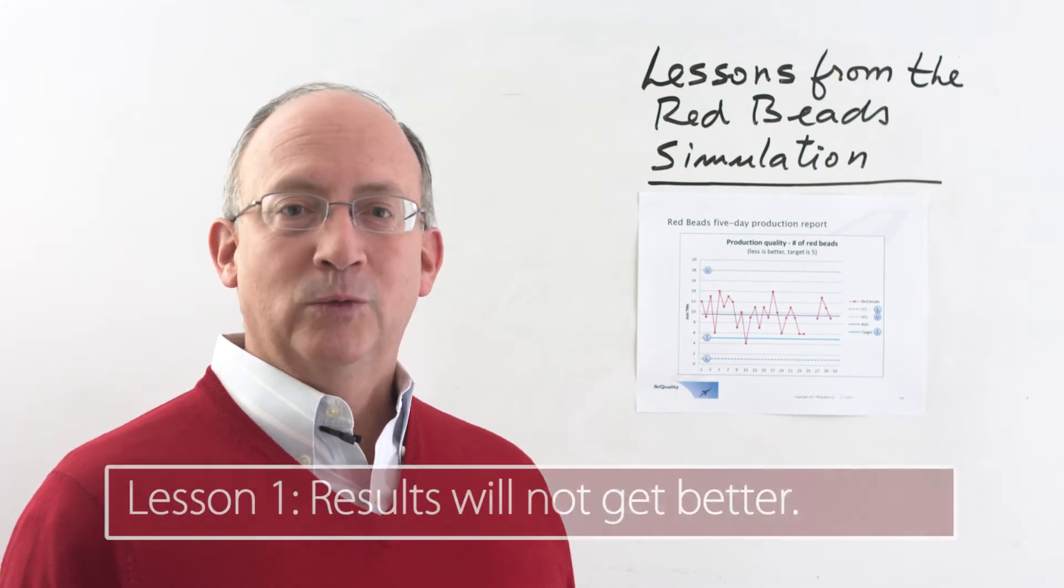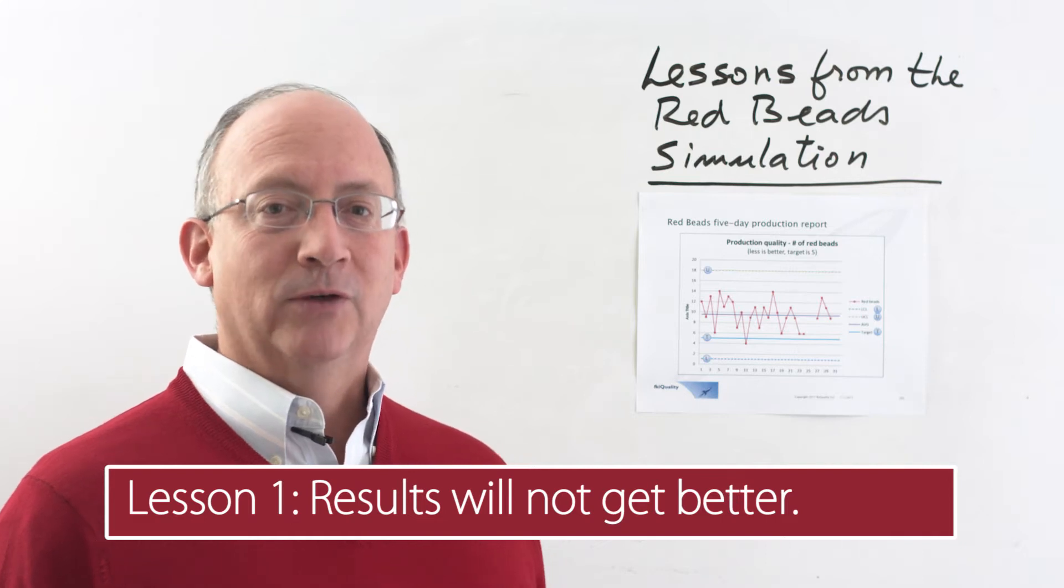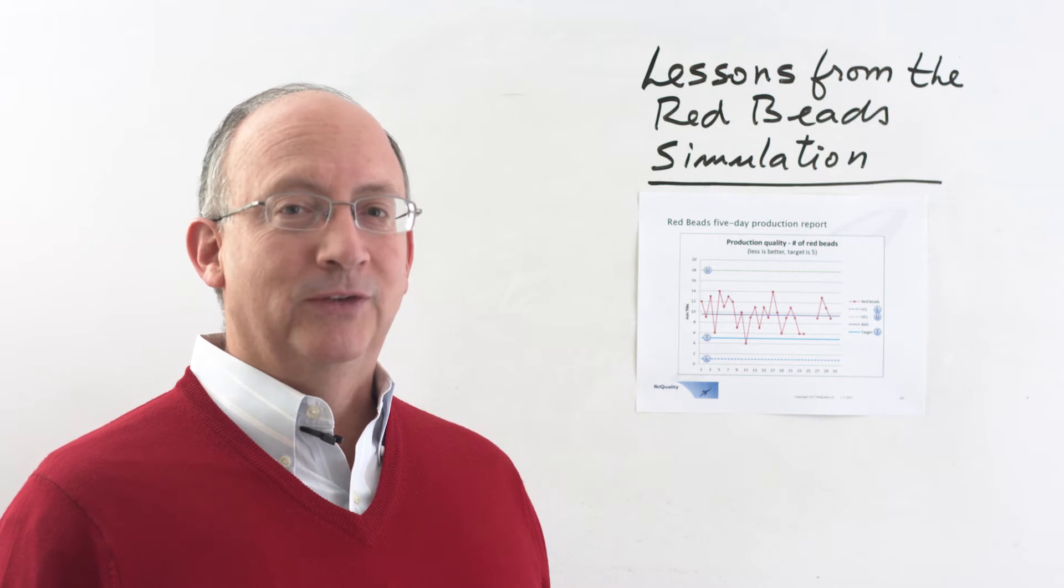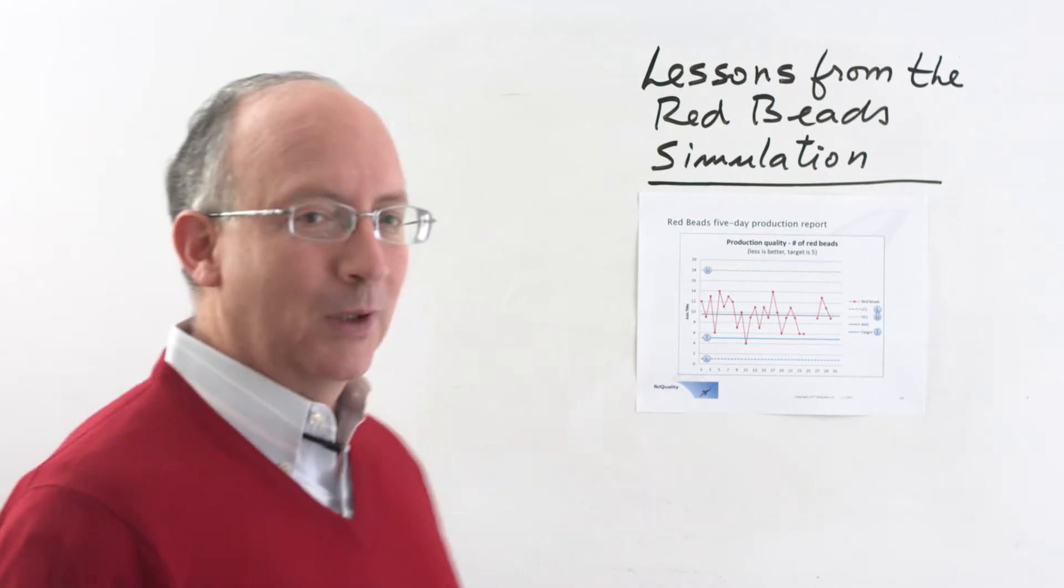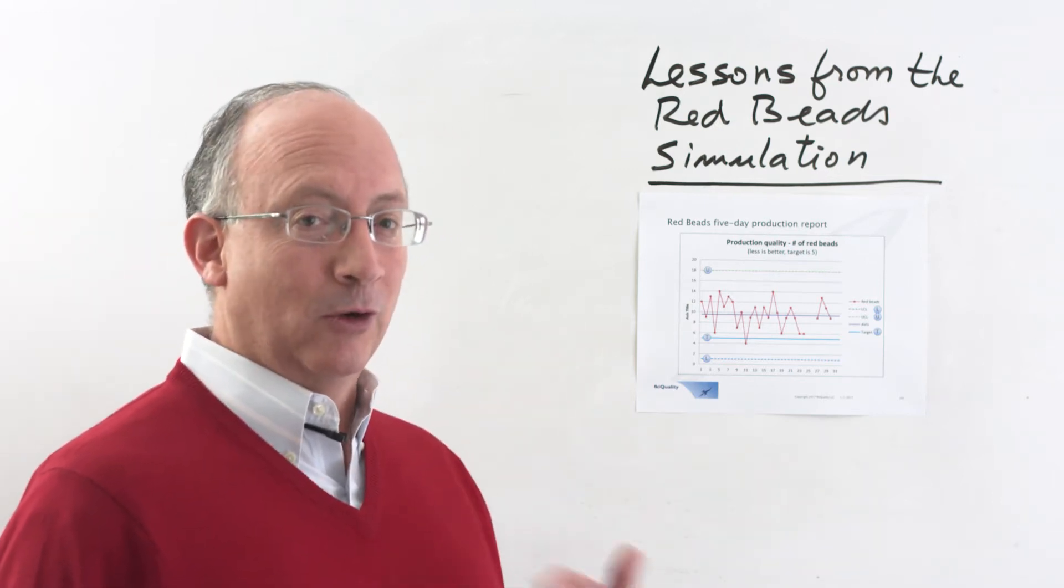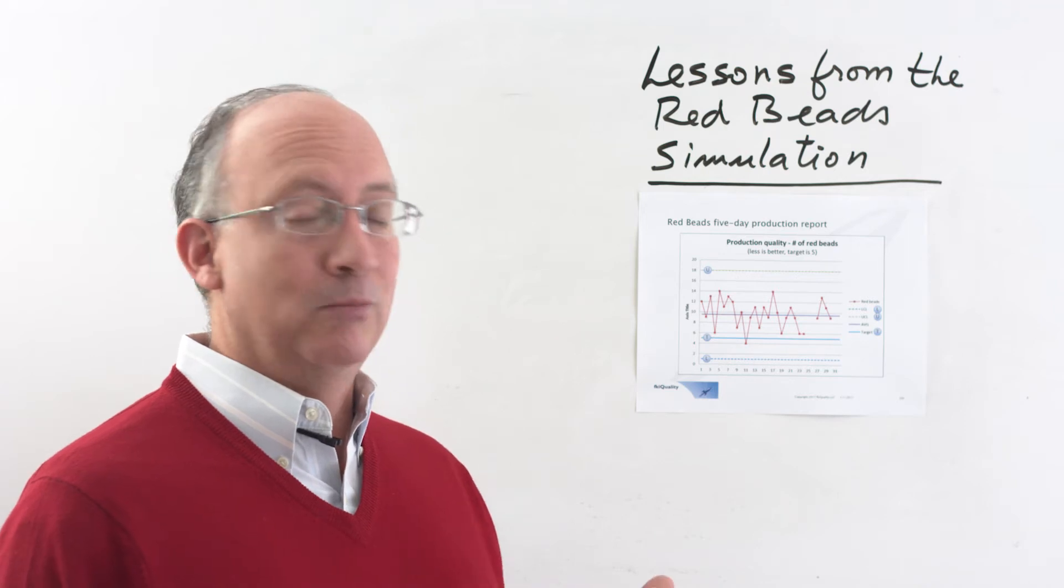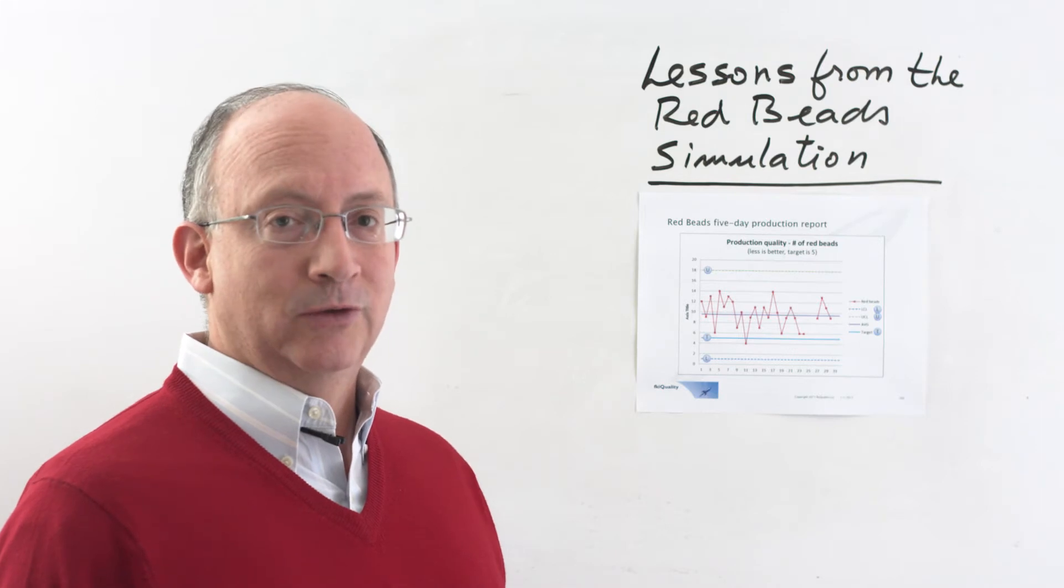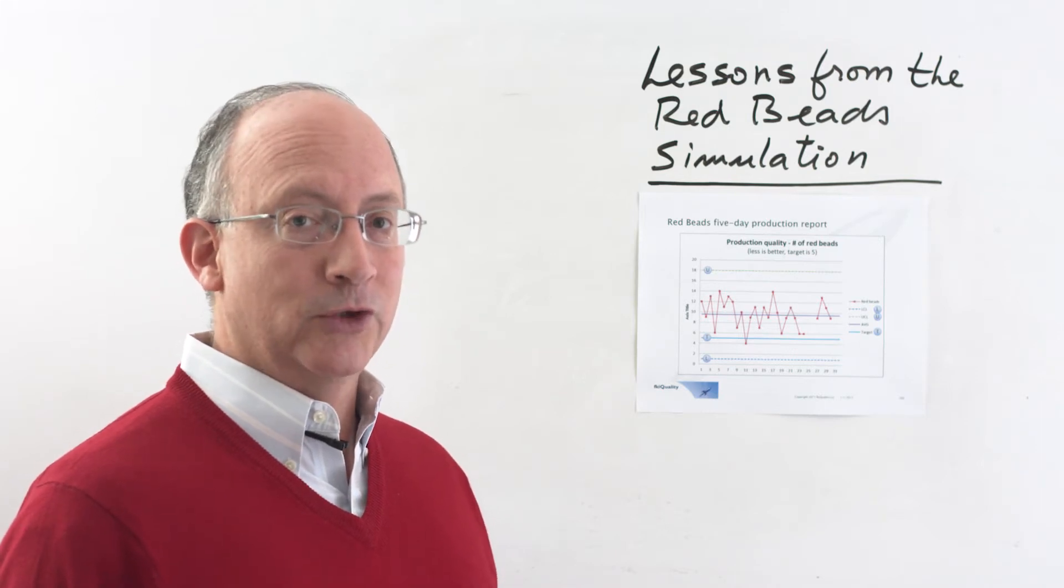The first lesson would be that the results will not get better because the system is stable. How do we know that the system is stable? Well, that's why we have charted the numbers. We collected the results by the number, meaning the number of Red Beats obtained by everybody, and then we charted all these numbers into something called a control chart.